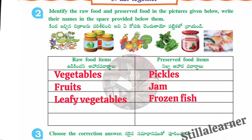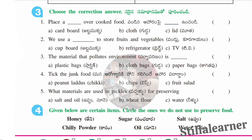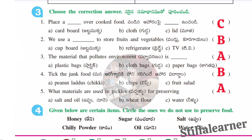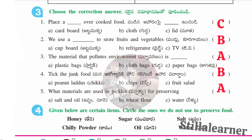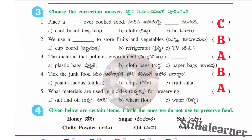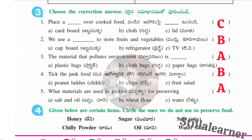The third section is choose the correct answers. First: place a lid over cooked food — answer C, lid. Second: we use refrigerators to store fruits and vegetables — answer B. Third: the material that pollutes environment is plastic bags — answer A. Fourth: junk food example is chips — answer B. Fifth: materials used in pickles for preserving are salt and oil — answer A. So the answers are C, B, A, B, A.